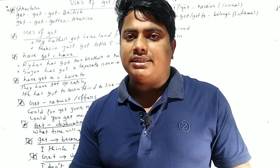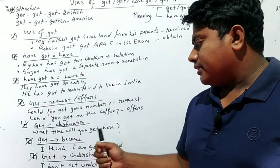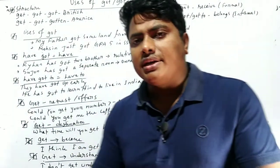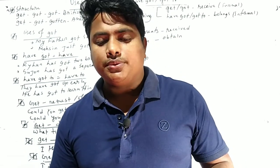Get means become. Here's the example: I think I am getting old. Actually, getting old is a natural thing. I am going to or I became old.